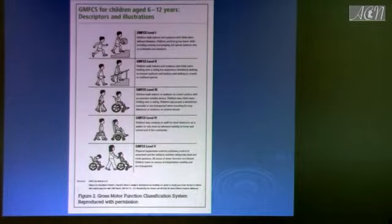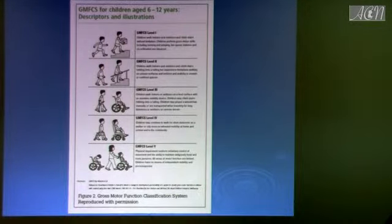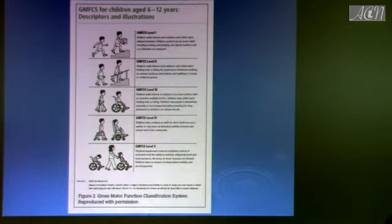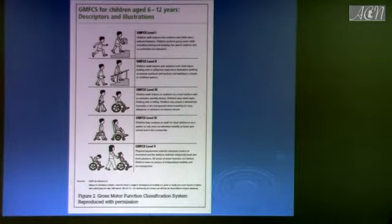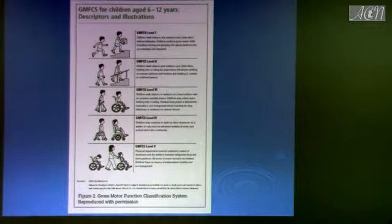GMFCS for children age 6 to 12 years: Level 1 — the kid is almost functional, moves by himself. Level 2 — might need some assistance. Level 3 — needs more assistance, like a wheelchair that he can operate, or can use crutches. Level 4 — needs more assistance, wheelchair-bound. Level 5 — completely dependent on his family.